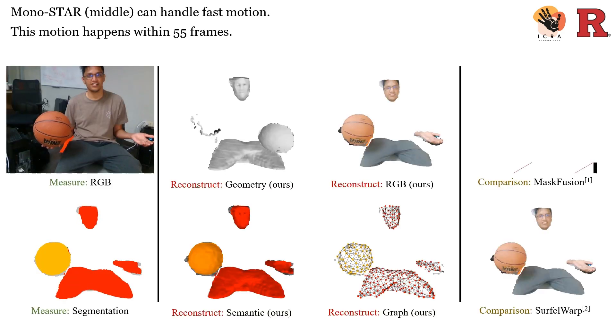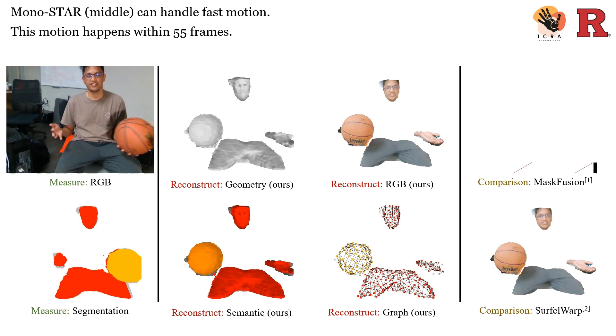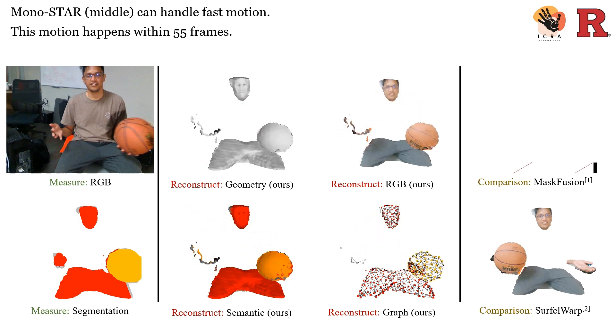Since reconstruction and tracking ground truth data is very hard to acquire, our experiments are all qualitative comparisons. This is a scene where a student is passing one basketball from one hand to another. As you can see, Monostar is able to capture the fast motion and topological change correctly, while our baseline methods, SurfelWarp and MaskFusion, cannot.